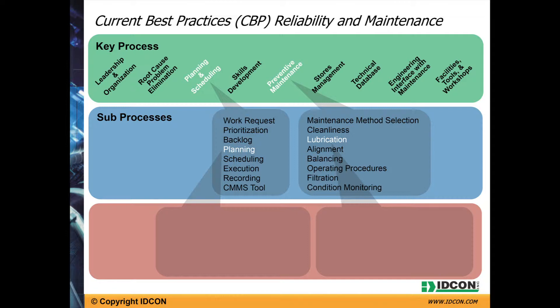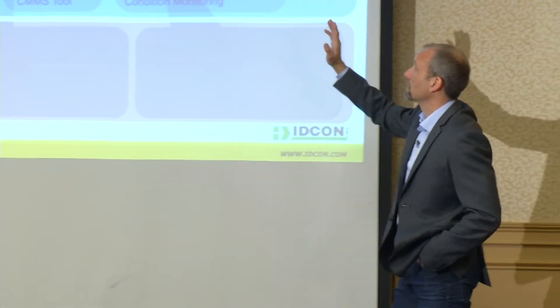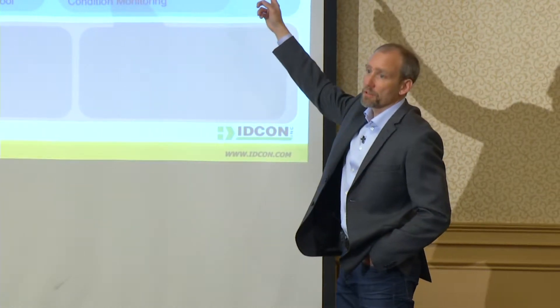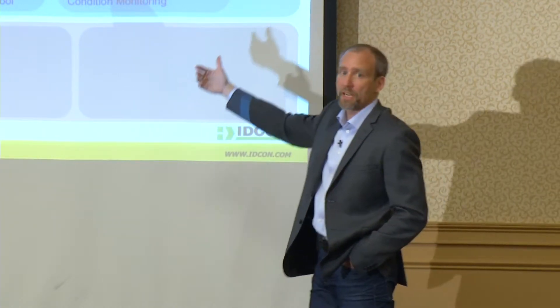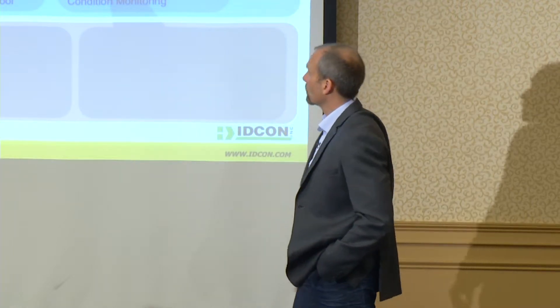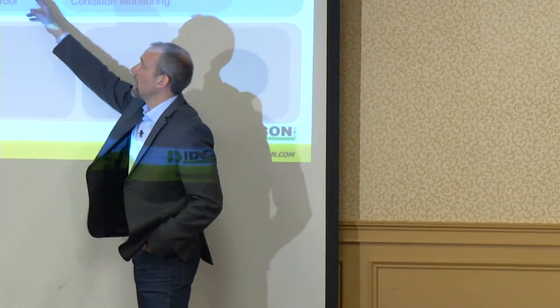We've divided into nine key processes: leadership, organization, root cause, planning and scheduling, skills development — including craftspeople and management — preventive maintenance including operator basic care, stores management, technical database, and engineering's interface with maintenance. It's very important how we purchase and buy equipment, facilities, tools, and workshops. Those are the key areas in what we call our assessment or best practice tool.